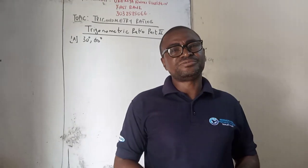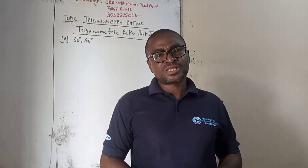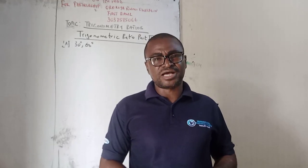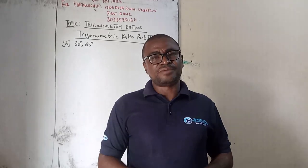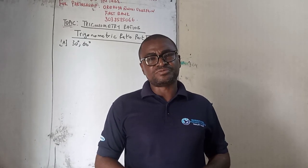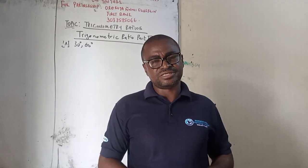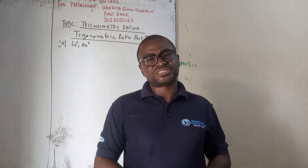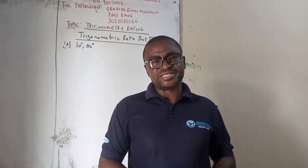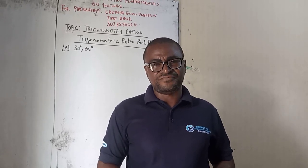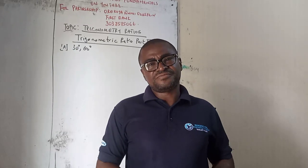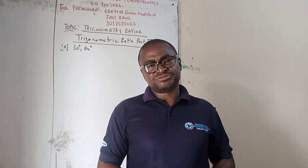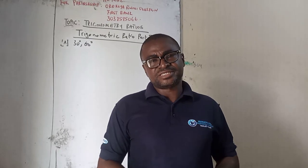Today we are continuing Trigonometry Ratio Part 2. The trigonometry ratio we are taking is on special angles. I'm starting with angle 30 and angle 60 degree. If time permits, I'm going to do the other special trigonometry ratios which I indicated in my other video. You can refer to the other video to see those other special trigonometry ratios.